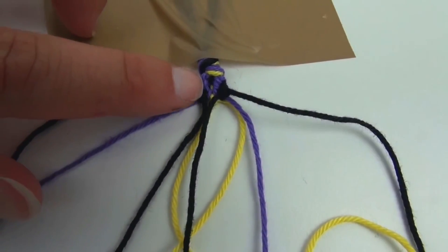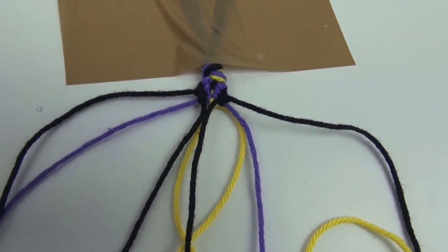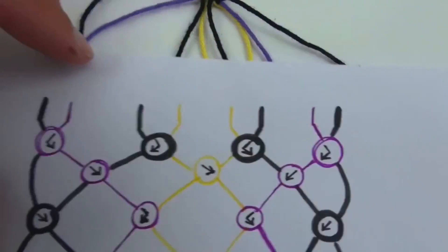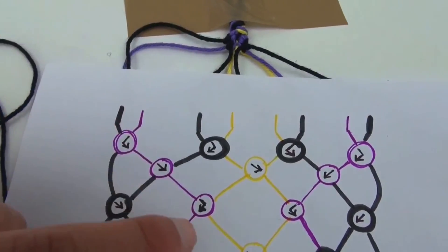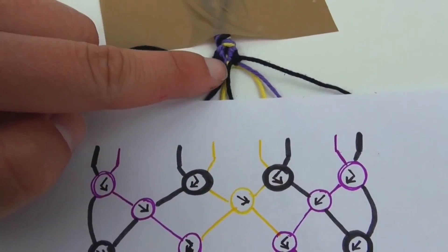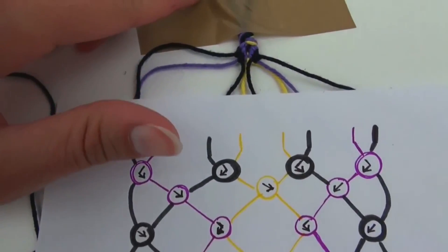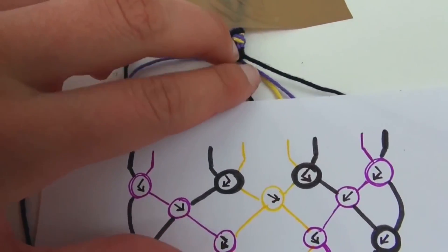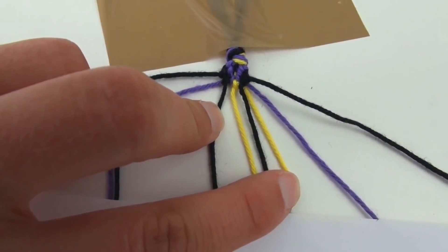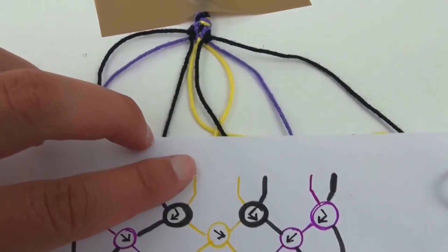As you can see, there's a little bit that you can see already. Obviously when you've done more rows you can see more, you can see a bit better. You can see the shape of the purple, then yellow one stays in the middle, and the outside alternates between the purple and the black color.